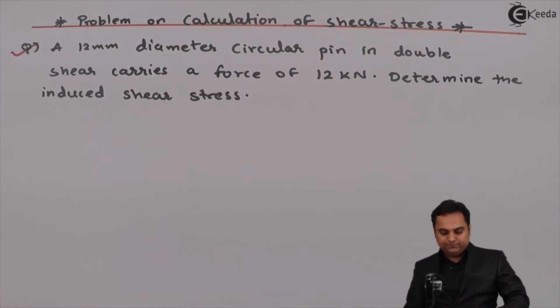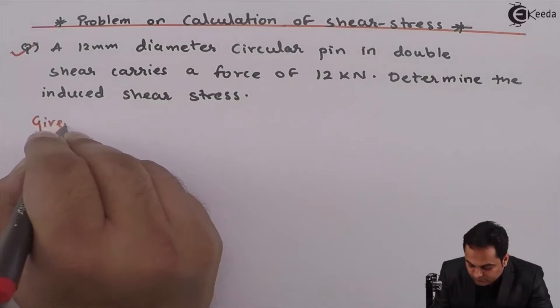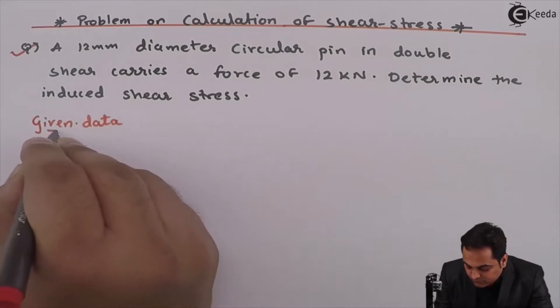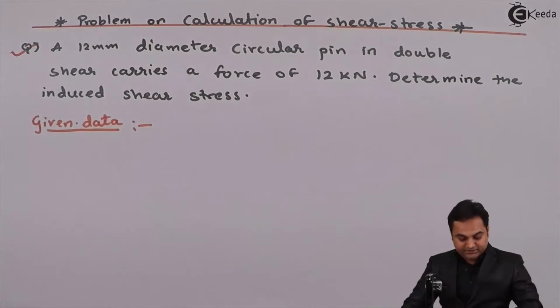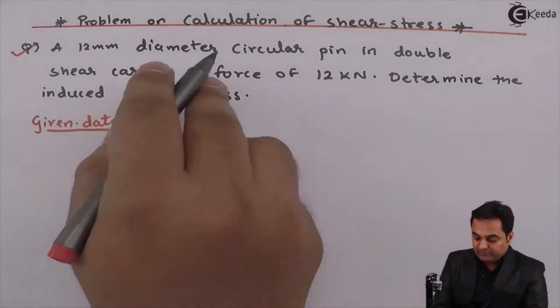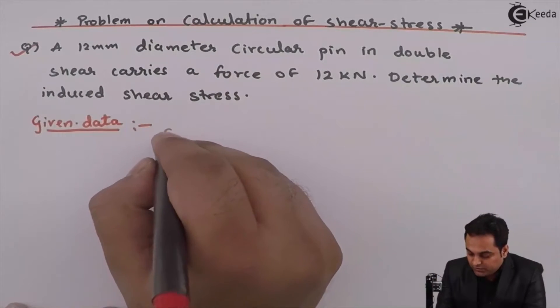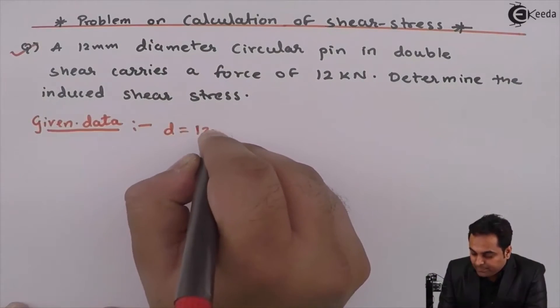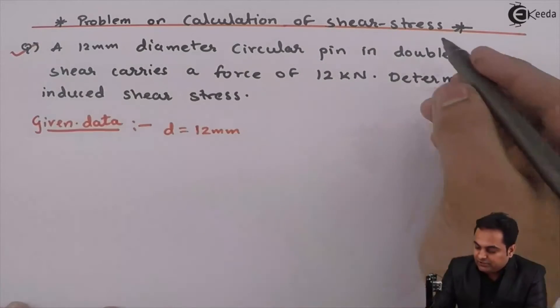I will write the data for this question. Here it is given that a 12 mm diameter circular pin, so I will denote it by D. It is 12 mm in double shear.